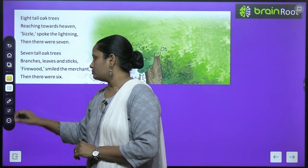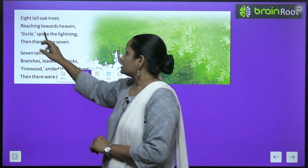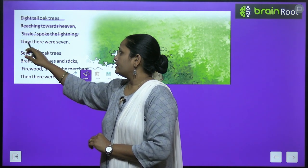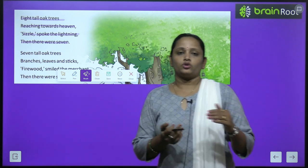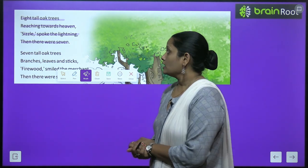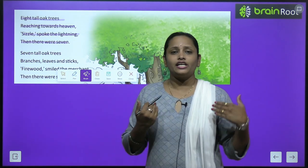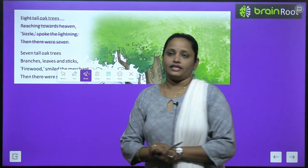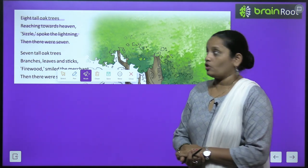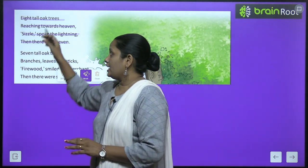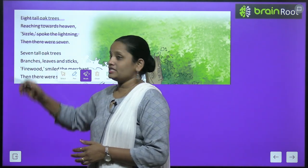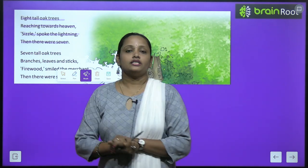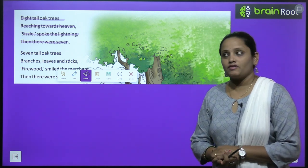'Eight tall oak trees reaching towards heaven, sizzle spoke the lightning, then there were seven.' اب eight tall oak trees اتنے اونچے ہیں کہ ایسا لگ رہا ہے وہ heaven تک پہنچ رہے ہیں۔ اچانک آسمان سے بجلی چمکی اور sizzle means جل جانا — ان میں سے ایک tree جل گیا۔ جس کے بعد then there were seven — سات trees بچے۔